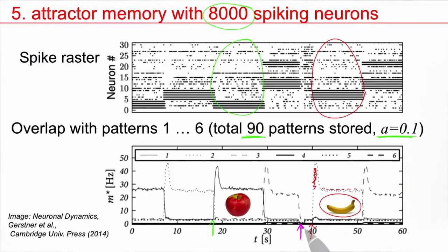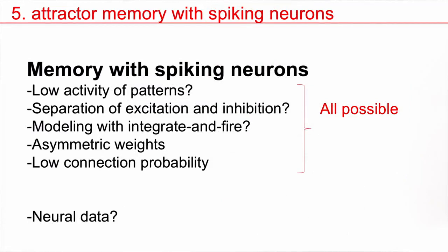This network of 8000 neurons total can store many patterns. Each neuron is involved in the retrieval of many of these patterns. The concepts are distributed across different neurons, and each neuron participates in several of these concepts. The whole thing works with spiking neurons that emit spikes occasionally from time to time. It's possible to have memory with spiking neurons. We can work with low activity of patterns. We can separate excitation and inhibition. This is a model with spiking neurons of the integrate-and-fire type. We have asymmetric weights. We have low connection probability. All this is possible. The question now is, how does this relate to neural data?